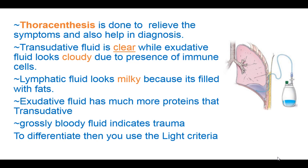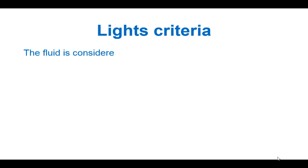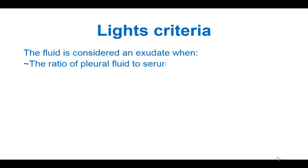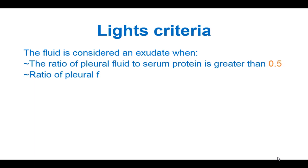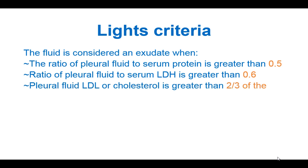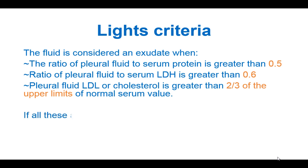To differentiate these, you use the Light's criteria. The fluid is considered exudative when the ratio of pleural fluid to serum proteins is greater than 0.5, the ratio of pleural fluid to serum lactate dehydrogenase is greater than 0.6, and pleural fluid LDH or cholesterol is greater than two-thirds of the upper limit of the normal serum value. If all these are absent in a fluid, it is a transudate.